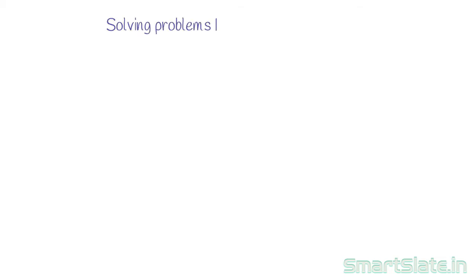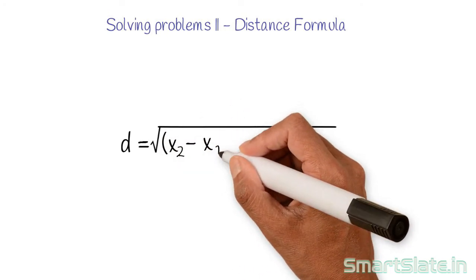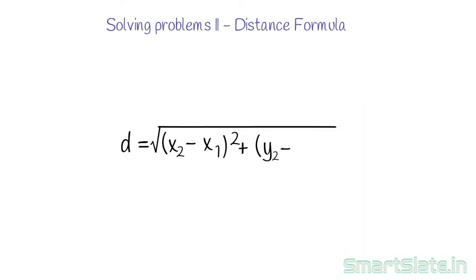The distance formula provides a formula to calculate the distance between two points given the coordinates of those points. If (x1, y1) and (x2, y2) are the two points, then the distance between them can be calculated using the formula: square root of (x2 minus x1) squared plus (y2 minus y1) squared.